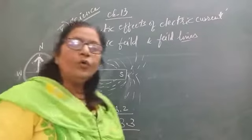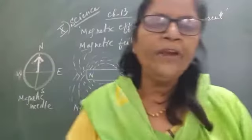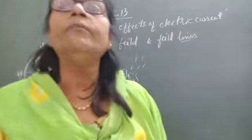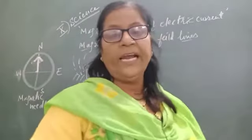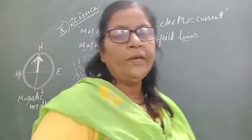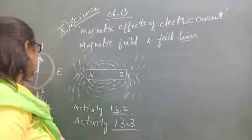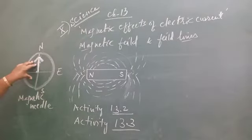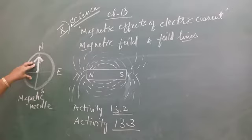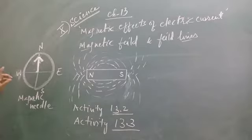Now you are familiar with the fact that the compass needle gets deflected when brought near the bar magnet. This is a magnetic needle. When it is brought near the magnet, it gets deflected. Actually in its normal position, it always rests pointing north.